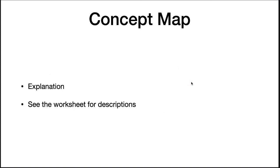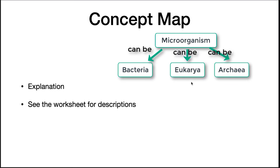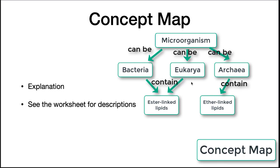To help you retain all we have covered about microbial cell structure, I am asking you to make a concept map. Concept maps take ideas and relate them with action words. For example, you could write the word 'microorganism,' then link with 'can be' to bacteria, archaea, and eukarya. From there, you can write ether-linked lipids and ester-linked lipids and draw arrows from archaea using the action word 'contain.' I have provided an assignment on Canvas with more detailed directions — please complete it as directed.